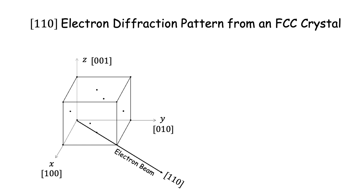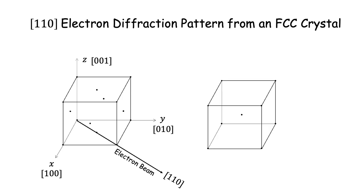In direct space this is a difficult problem, requiring consideration of scattered waves from each atom and summing them in given directions. However, in reciprocal space the corresponding reciprocal lattice is a BCC lattice. For the same electron beam direction, finding the diffraction pattern simply requires taking a section of this reciprocal lattice perpendicular to the beam.